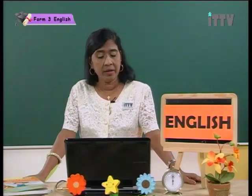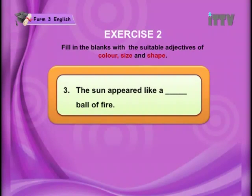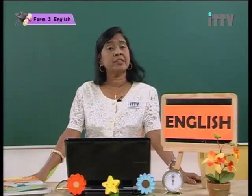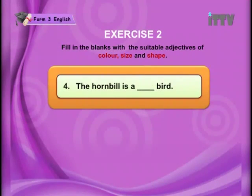Number three: The sun appeared like a blank ball of fire. Answer: The sun appeared like a huge ball of fire. Adjectives always give you a clear picture. Number four: The hornbill is a blank bird. Think of the adjective. Answer: The hornbill is a large bird.